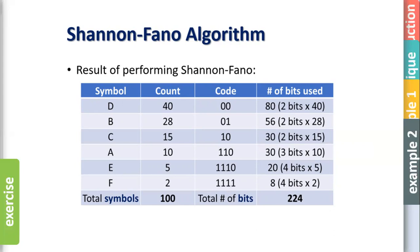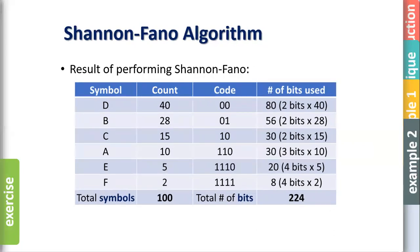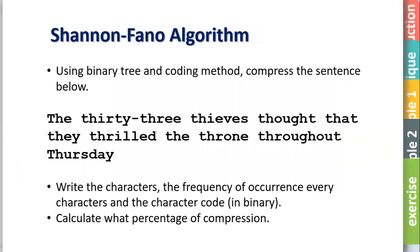So I hope you understand this. So if you want to try it, you can use this exercise. A bit long. If you look at the T is different, uppercase and lowercase. So it's different characters. So you can use this. Try using binary tree using same method. Sort first. Calculate first, then sort. And then create binary tree. Create the code. And then calculate what percentage of the compression. Basically like that. That's it.